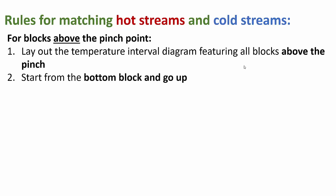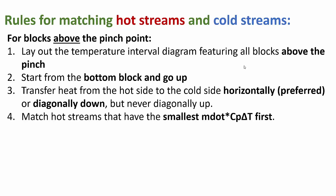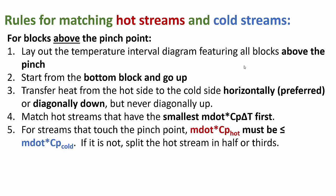We always start from the bottom block and go up. We transfer heat from the hot side to the cold side horizontally or diagonally down, but never diagonally up — we will see why that isn't physically possible. We match hot streams that have the smallest M_dot·Cp·ΔT first — in other words, we match hot streams that have the smallest Q first — and we usually match them with cold streams that have the largest Q or the largest M_dot·Cp. For streams that touch the pinch point, M_dot·Cp hot must be less than or equal to M_dot·Cp cold. If it isn't, then we split the hot stream in half, thirds, or quarters so that M_dot·Cp hot is less than or equal to M_dot·Cp cold.